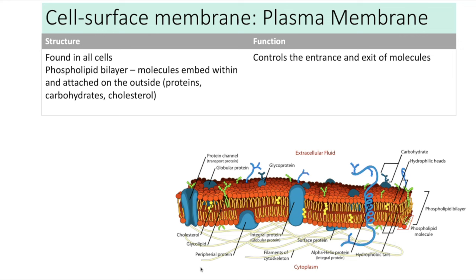The embedded proteins include protein channels and protein carriers that enable molecules to pass through. You also get glycoproteins — a protein with a carbohydrate attached — and glycolipids — a carbohydrate attached to the phospholipid — which often function as receptors. The function of the plasma membrane is to control what can enter and exit the cell.